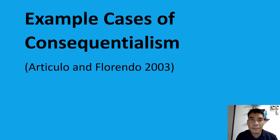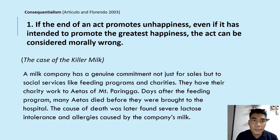Here we have example cases of consequentialism. Keeping in mind the basic precept that an act is good if it produces pleasure, happiness, or good result, we can have these example cases to help us determine if an act is ethical or unethical based on the consequentialism principle. These examples are just general examples since there are still other forms or variations of it. With the first rule: if the end of an act promotes unhappiness, even if it intended to promote the greatest happiness, the act can be considered morally wrong.